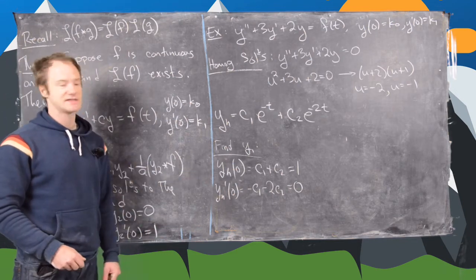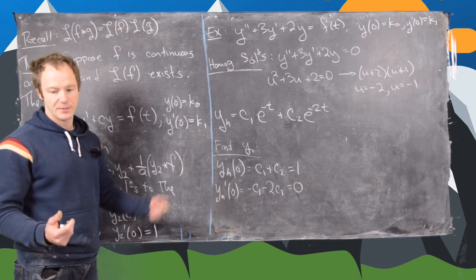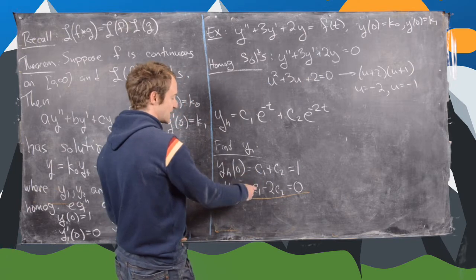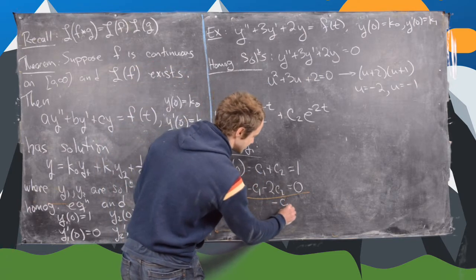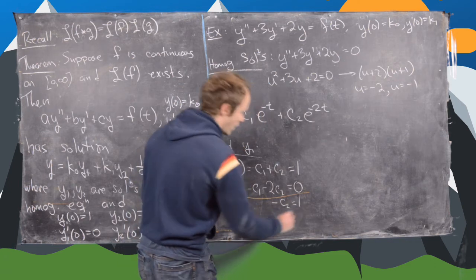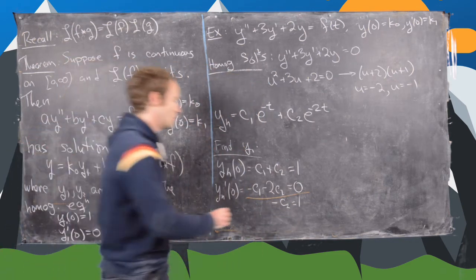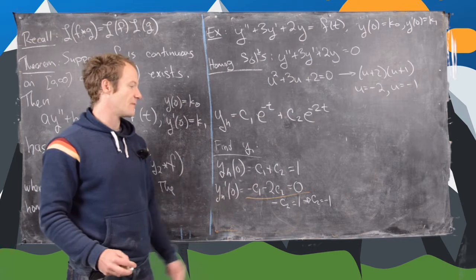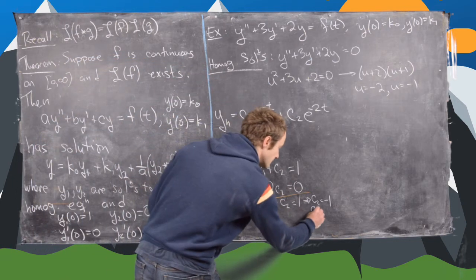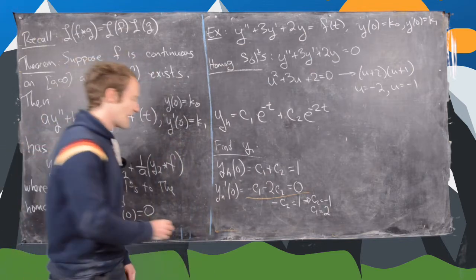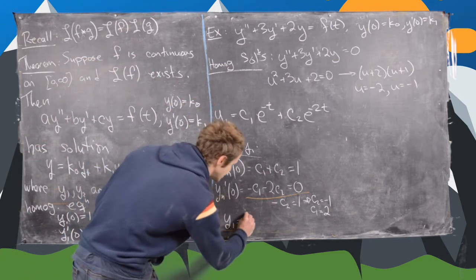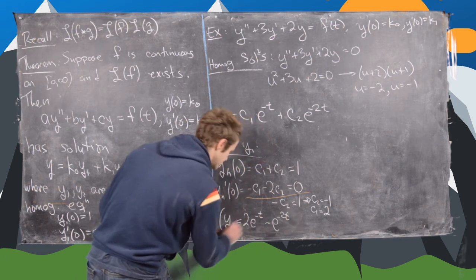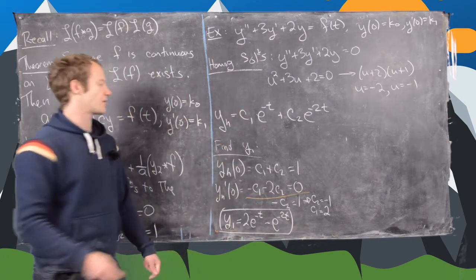So there's a bunch of ways to solve this for c1 and c2. I'll let you pick your favorite. But maybe what I would do is I would add these equations. And notice that the c1s are going to cancel. And we're going to get minus c2 equals 1, which makes c2 equal to negative 1. And then from that, we can see pretty easily that c1 will be equal to 2. So that gives us y1 will be equal to 2e to the minus t minus e to the minus 2t.